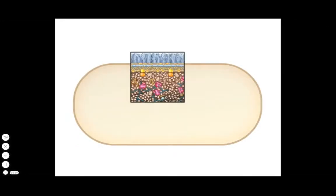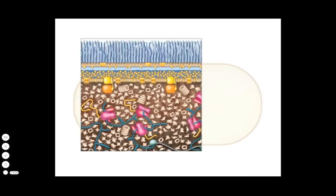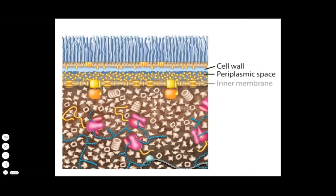The periplasm of a gram-negative cell lies between the inner and outer membrane and contains important proteins that bind nutrients for transport into the cell, and other proteins that carry out enzymatic reactions.